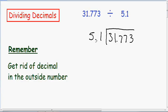In this particular example, we only can push it over one space. And whatever you do to the outside number, you have to do to the inside number. So since we moved our outside decimal one space to the right, we have to do the same thing to the inside decimal. So now since we moved both decimal points one space to the right, our 5.1 becomes a 51, and our 31.773 becomes 317.73.